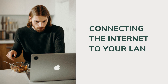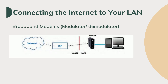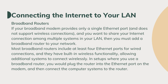Next is how to connect your internet to your LAN. We have different methods. We have broadband modems — the modem converts the incoming signal from your phone line, cable line, fiber optic line, or satellite dish into a digital signal that can be sent to a computer or to a broadband router. The modem is the point where the private LAN connects to the public one. The modem is the connection point which has two sides or faces. These are examples of broadband modems — from the modem, it connects to your desktop.